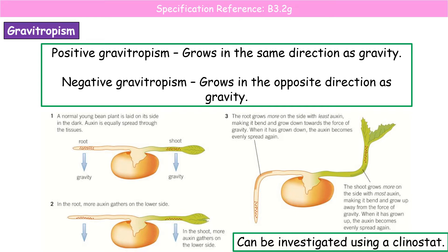We can investigate gravitropism using a piece of equipment called a clinostat. A clinostat is basically a little plastic cup that constantly spins. If you put a bean seed into the clinostat and have it constantly spinning, the roots and shoot just grow horizontally — there's no difference. If however you leave it on its side, the auxin produced in the tips diffuses back and accumulates on the side closest to the earth, because it accumulates on the side that gravity is acting.